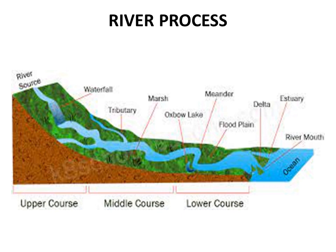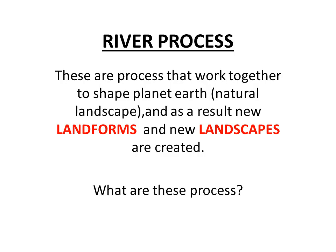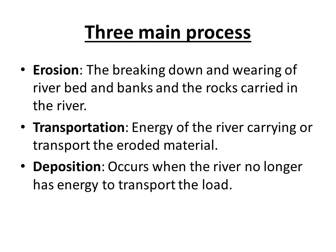River processes are processes that work together to shape planet Earth, creating new landforms and landscapes. There are three main processes: first, erosion; then transportation; and lastly, deposition. Erosion basically means the breaking down and wearing away of the river bed, banks, and the rocks being carried within the river.